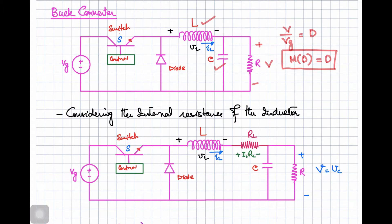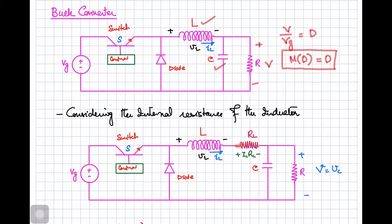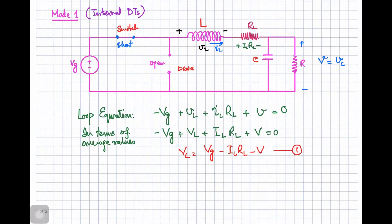In this video we are going to discuss the transfer function of the buck converter considering the internal resistance of the inductor. We will replace the inductor with an inductance plus its internal resistance RL, which represents the resistance of the winding. When current flows through the inductor, there will be a voltage drop modeled as IL·RL.